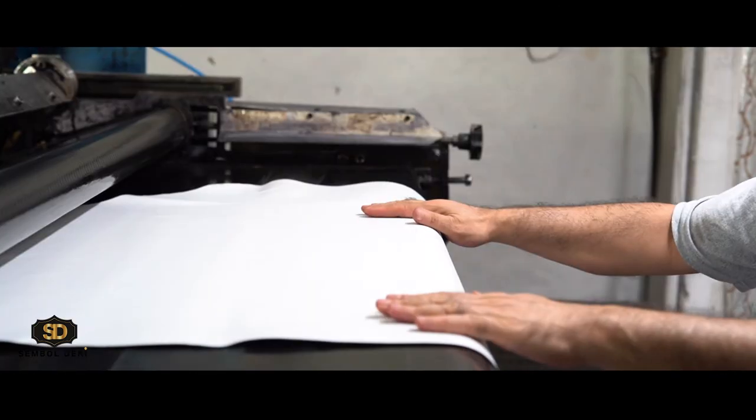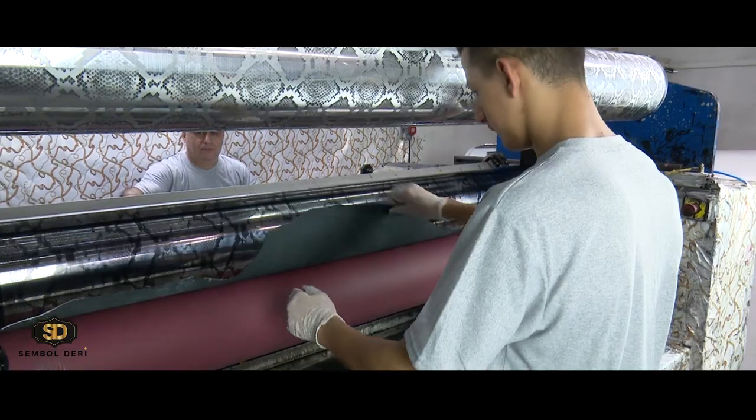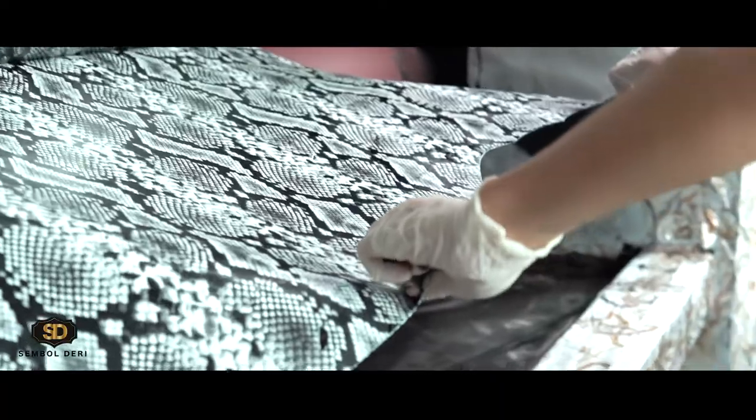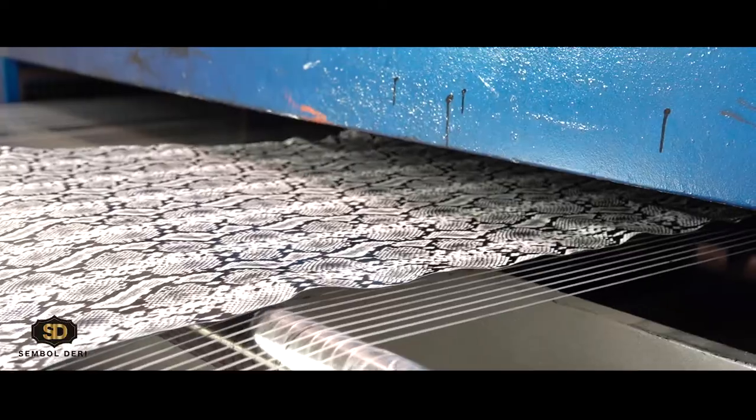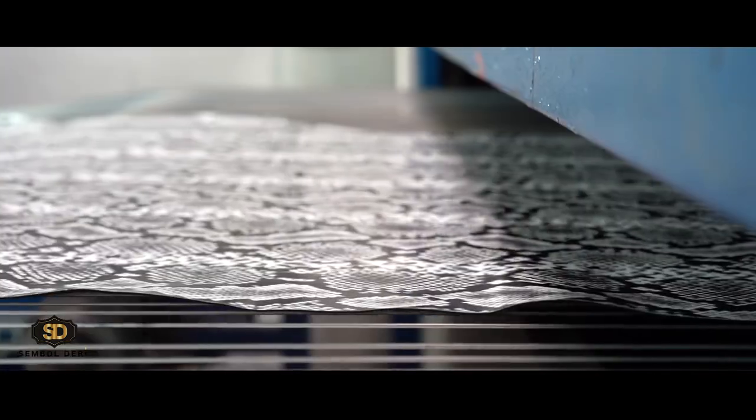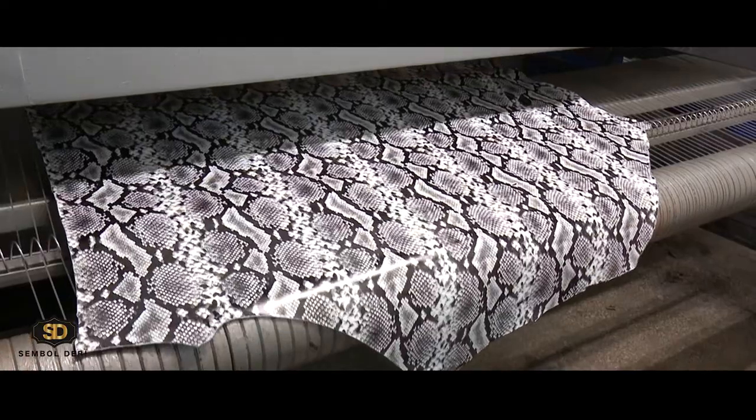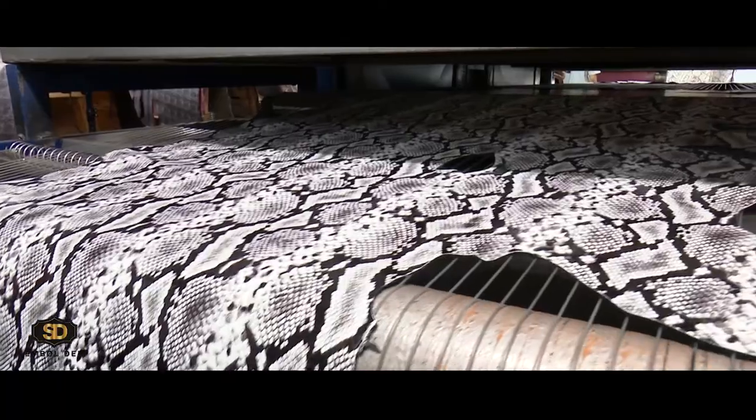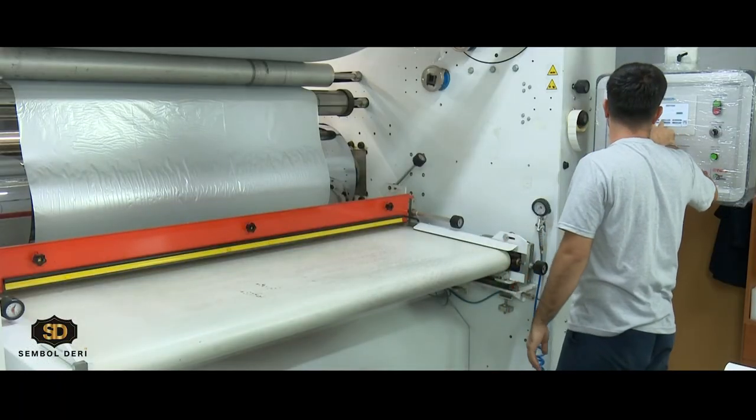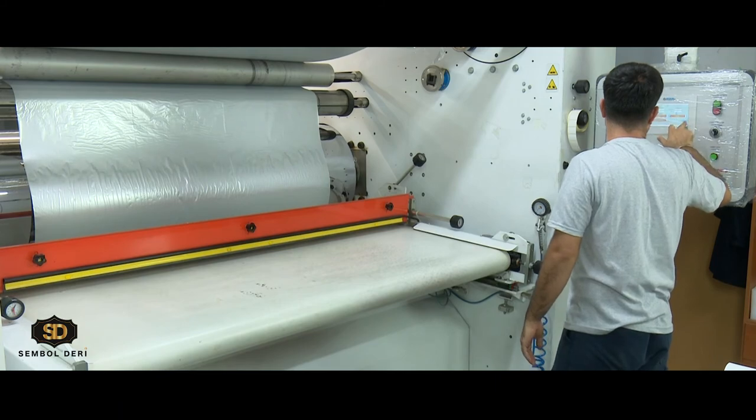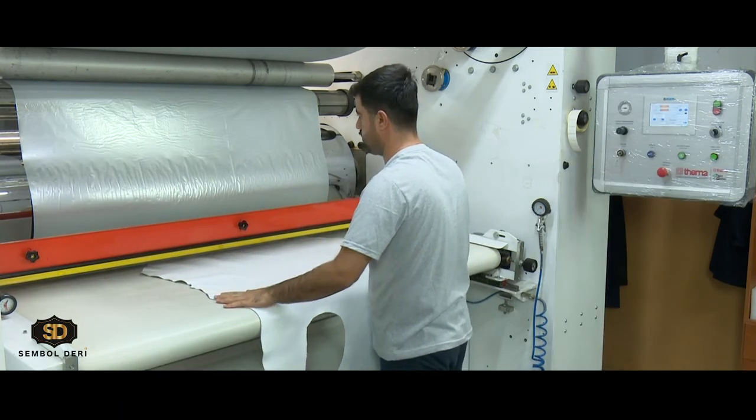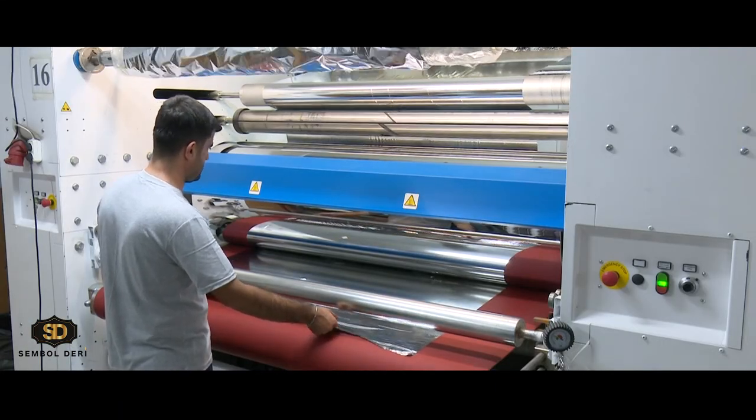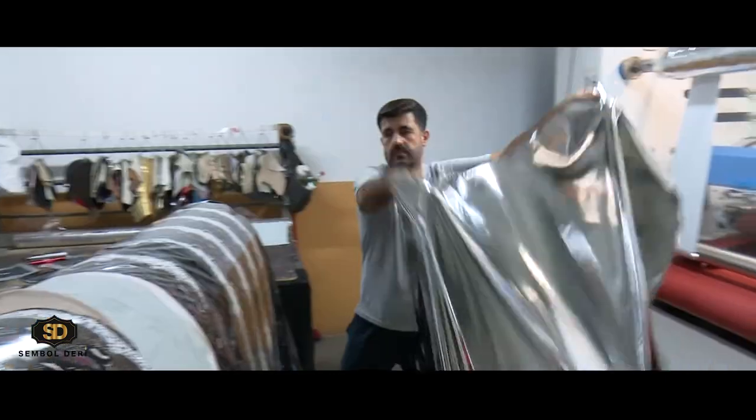Sembol Leather has undertaken to have a share in reaching the position it deserves in the Turkish leather industry by manufacturing with its innovative strategy and loyalty to quality standards. The R&D departments established by Sembol Leather, which aims to improve product quality by preserving its current production capacity, continue to work and create a modern future projection in order to achieve quality standards with improvement.